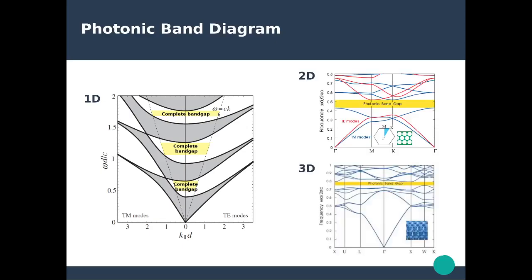Band structures can be calculated for two-dimensional and three-dimensional photonic crystals. For 2D crystals we can observe the TE and TM modes separately and the formation of photonic band gaps. In the 3D case a complete photonic band gap can be found — an energy range for which, regardless of the k-vector, light will not propagate through the crystal. This acts as a perfect omnidirectional mirror for that set of frequencies.